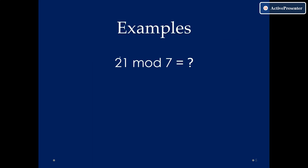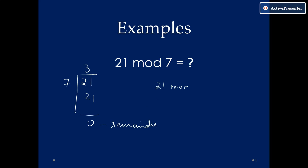Now A, that is 21, is larger than 7. So we have to divide A, that is 21, by 7. In the multiplication table of 7, we have 7 into 3 is 21, so our remainder is 0. Therefore, 21 mod 7 is equal to 0.